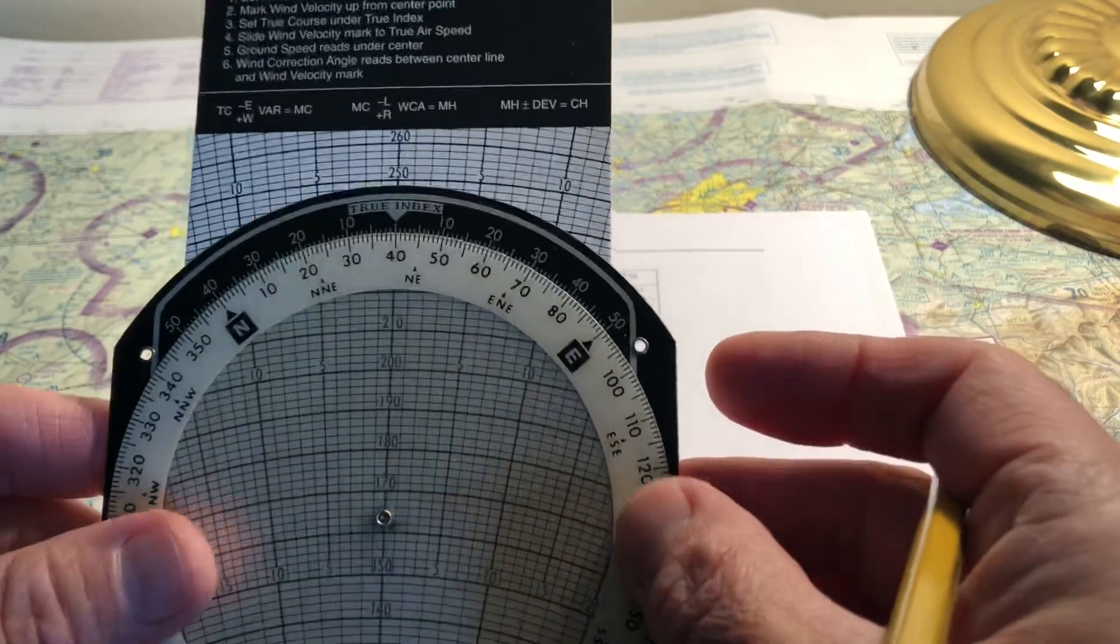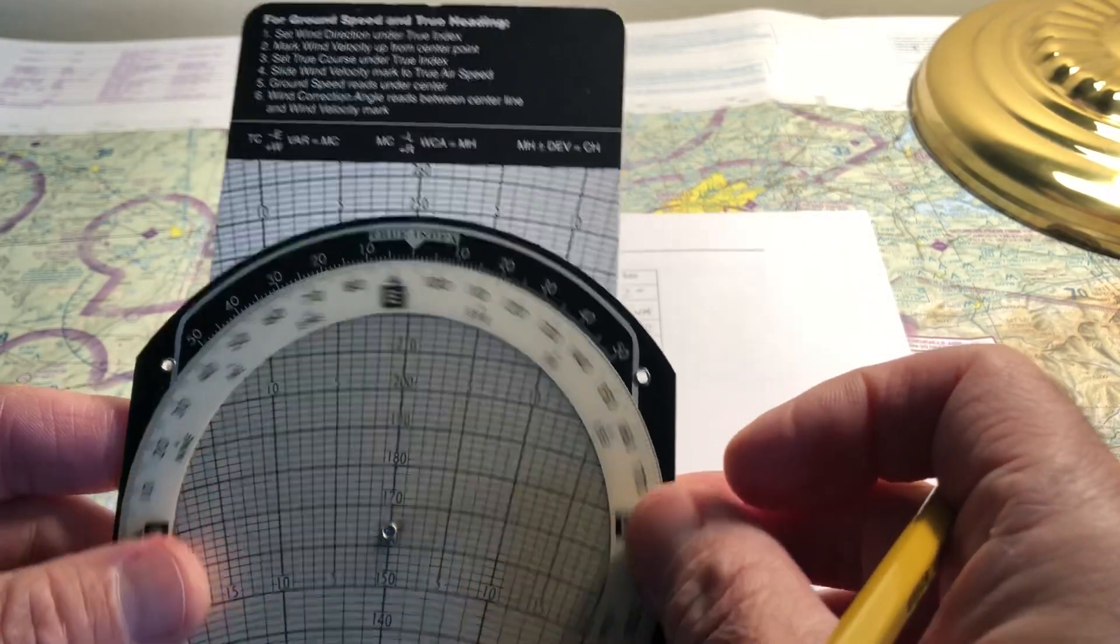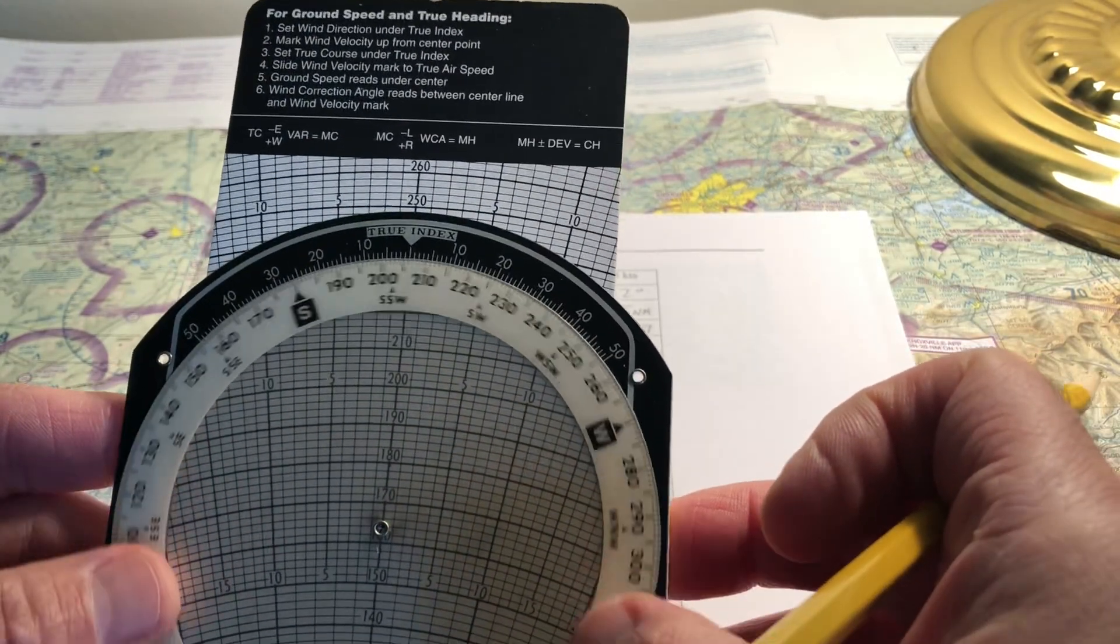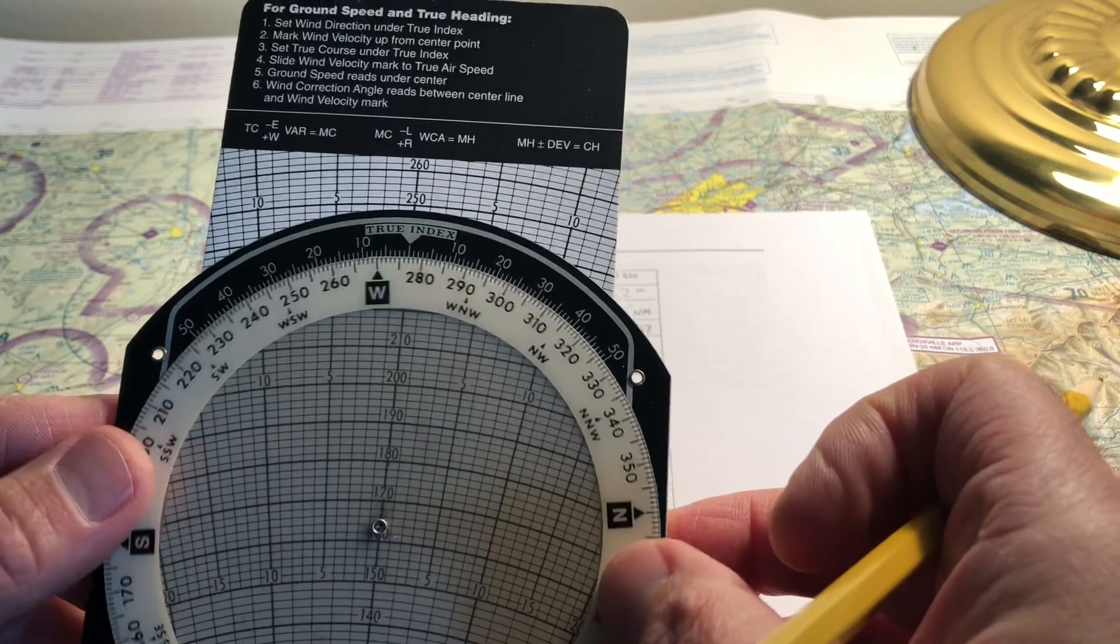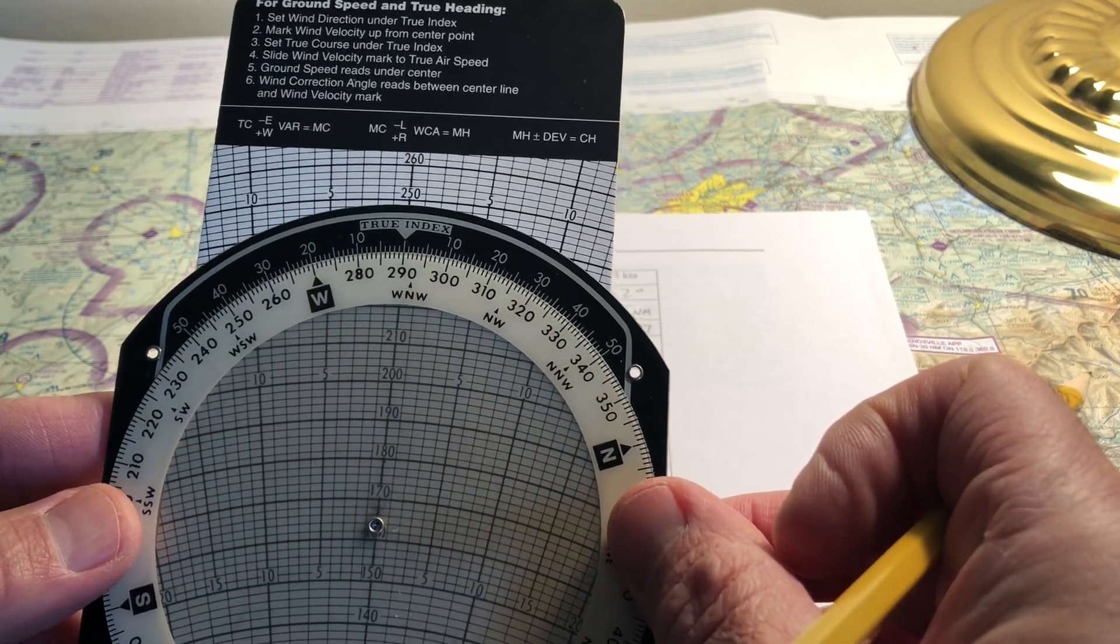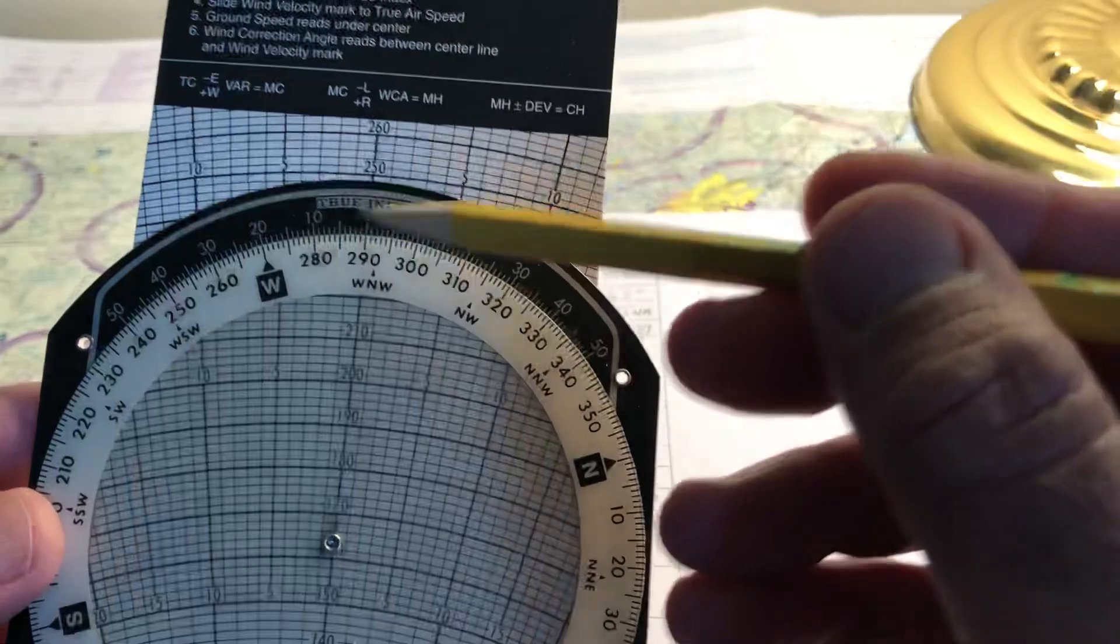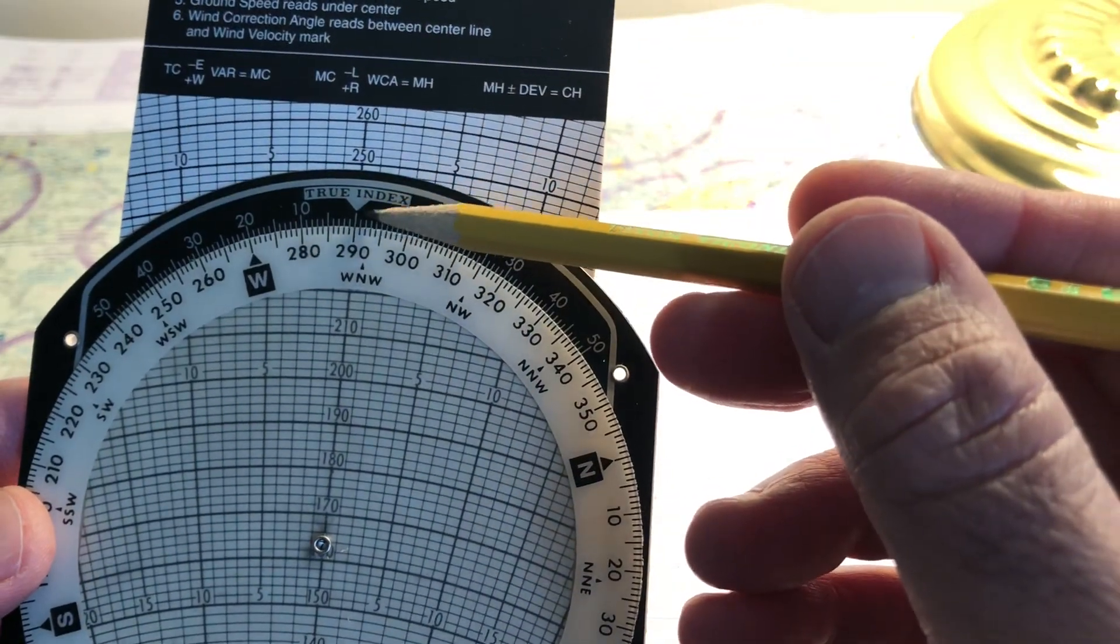Well, we just determined that the wind direction was 290 or is going to be 290. So we'll rotate this so that 290 is directly under the true index. Okay.